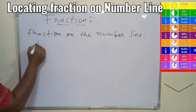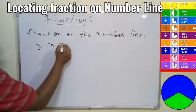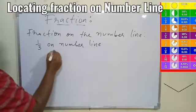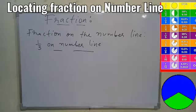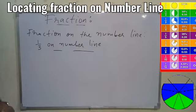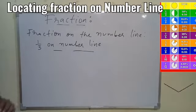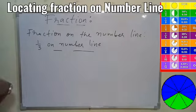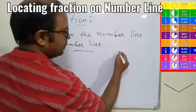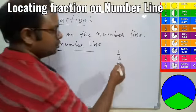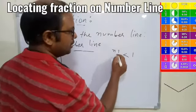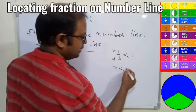Let's say we have to show 1/3 on the number line. The very first fraction we have is 1/3, and that is to be shown on the number line. Before we show it, we need to find out between which two numbers this fraction lies. So for 1/3, you know this is less than 1 because the numerator is less than the denominator.